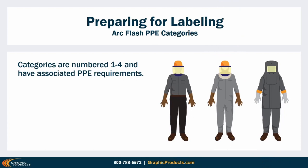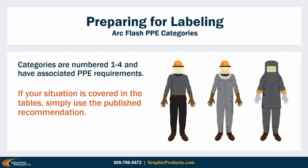The other approach is a shortcut. Instead of doing a lot of math, you can simply read a set of tables that NFPA has prepared in Article 130.7 C 15. These tables assign broad categories numbered 1 to 4 to some recognizable situations, and each category corresponds to a standardized list of PPE items and ratings. If your equipment and installation are covered in those tables, all you need to do is find the applicable entry and use the published recommendations. However, the tables don't cover all possible situations, and if your installation isn't covered, then there's no way to meaningfully apply the category system — the shortcut isn't available and you'll need to do an analysis.